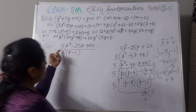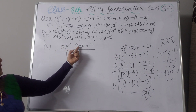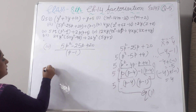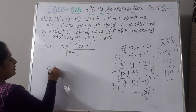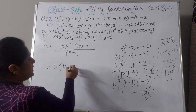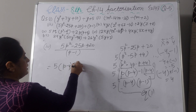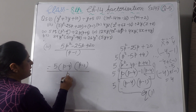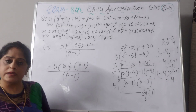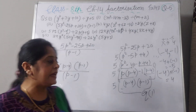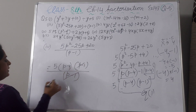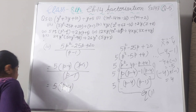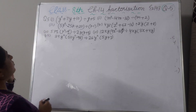So 5p squared minus 25p plus 20 equals 5(p minus 4)(p minus 1), divided by (p minus 1). Cancel p minus 1 and p minus 1, and your answer will be 5(p minus 4).